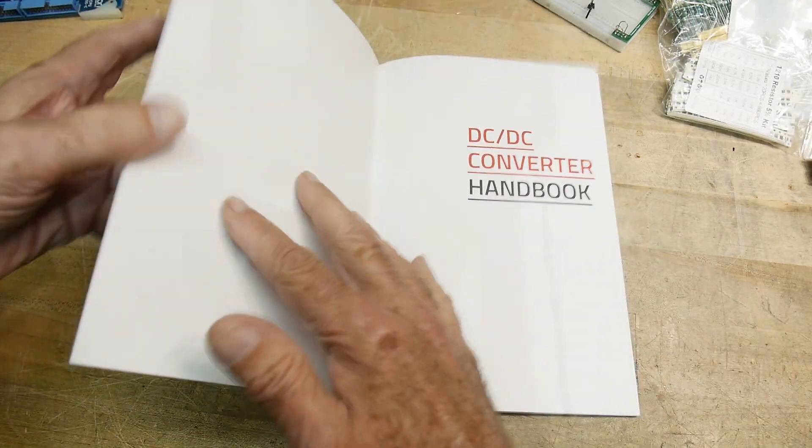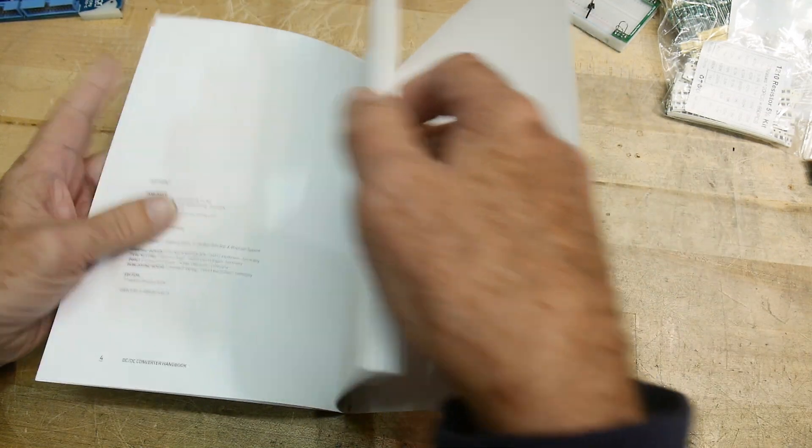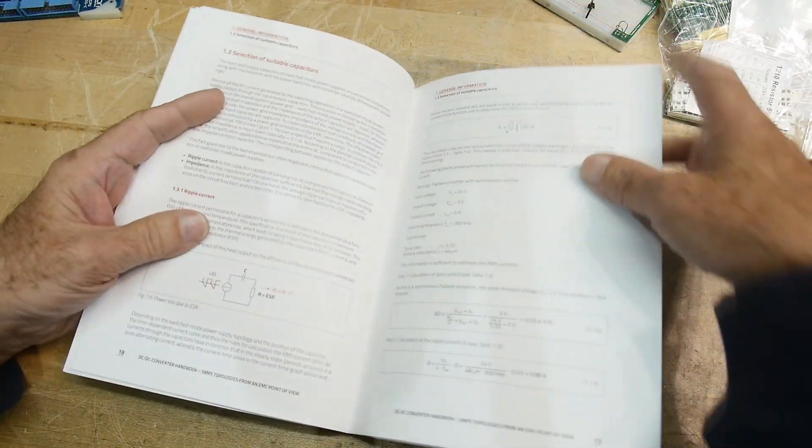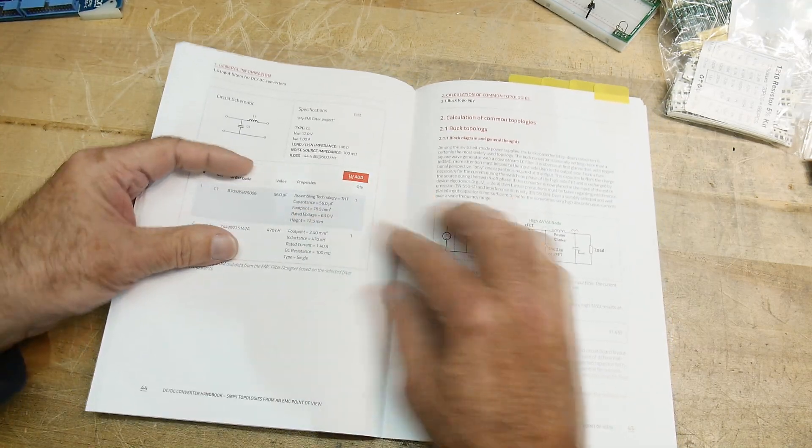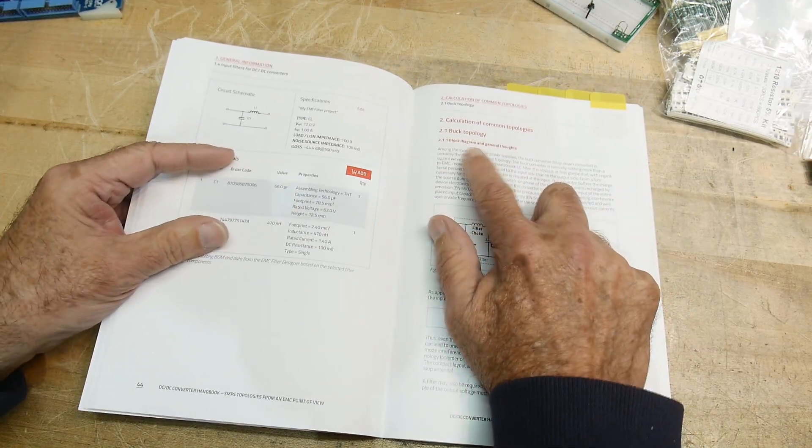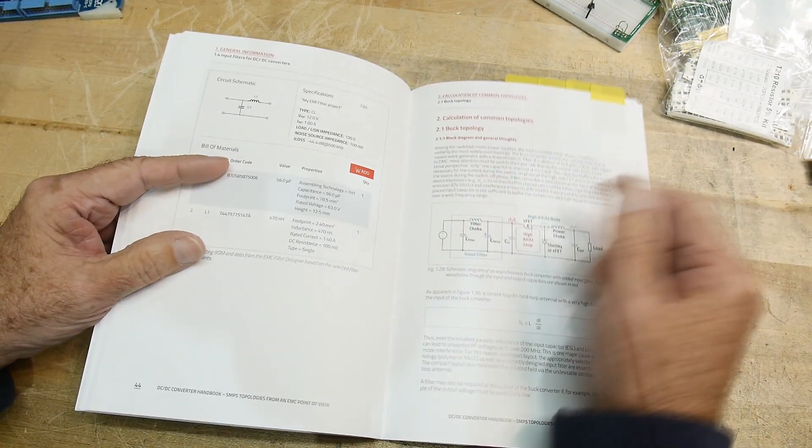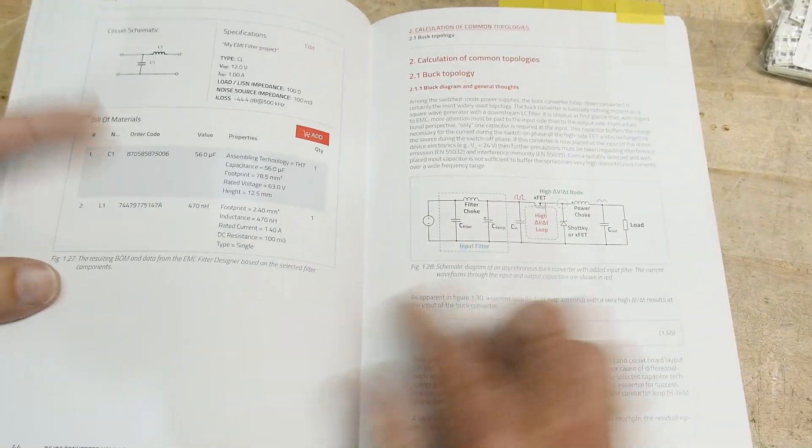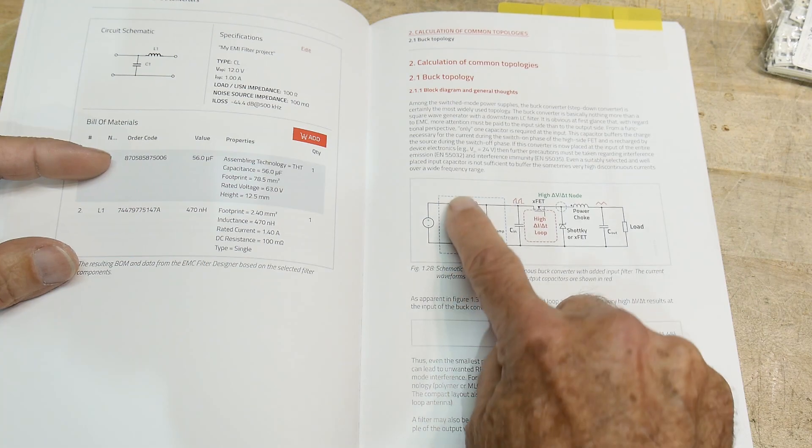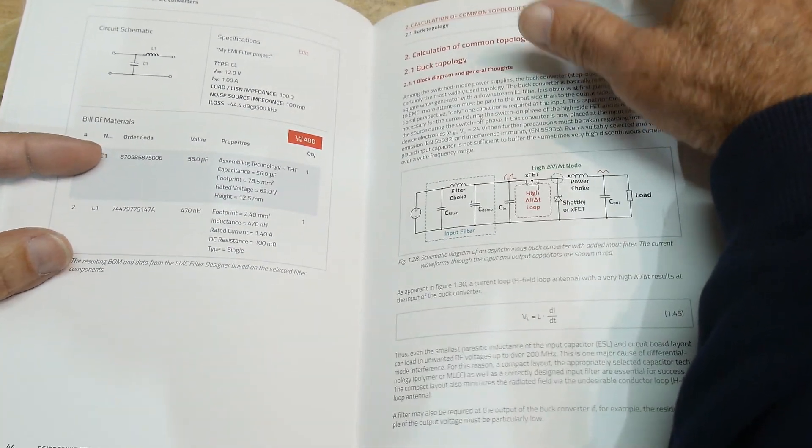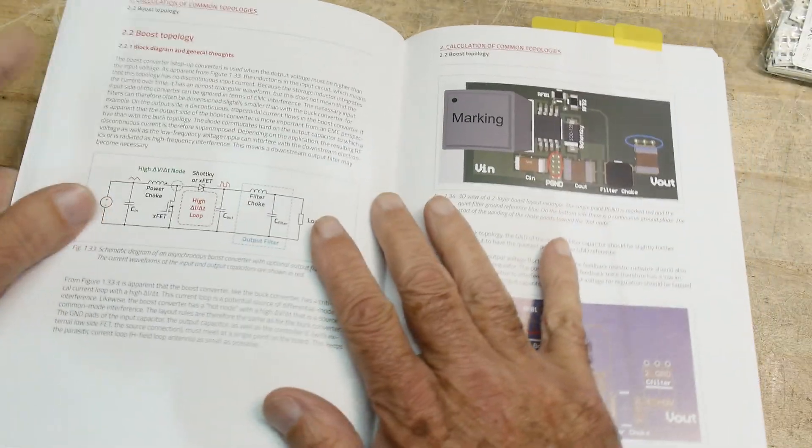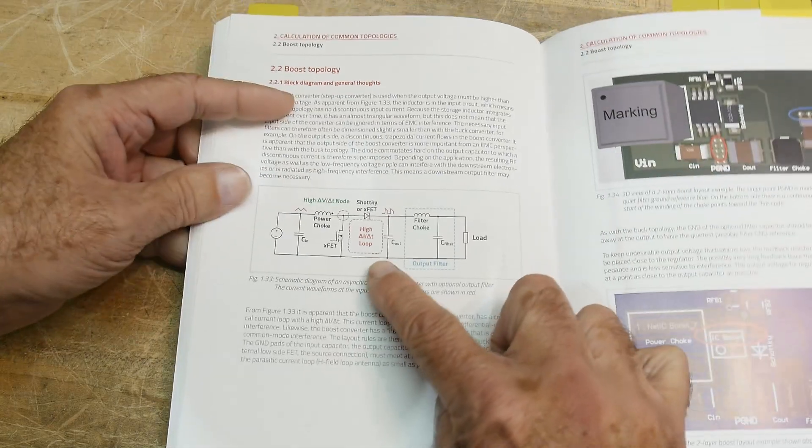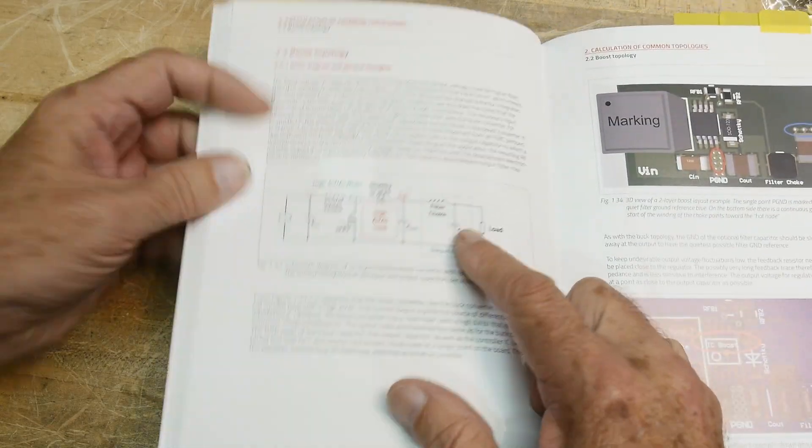It does cover the various types of DC to DC converters. So those being, you can have a buck technology, which is to take a higher voltage and convert it to a lower voltage. There's a boost topology that takes a lower voltage and boosts it to a higher voltage.